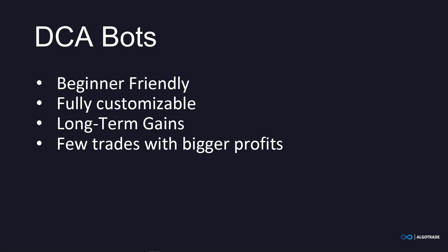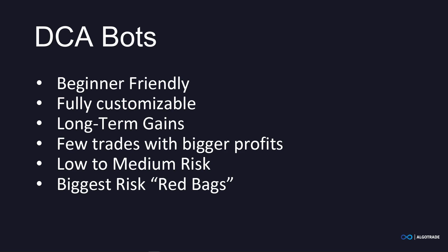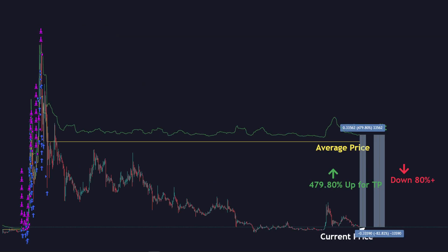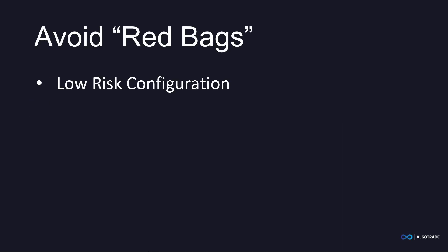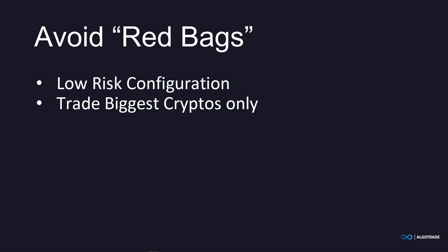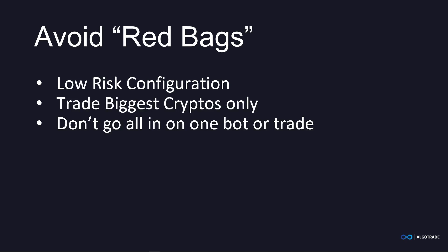DCA bots are low to medium risk, depending on your configuration and choice of cryptocurrencies to trade. The biggest risk you face is getting stuck in so-called red bags — trades on cryptos that have gone down 80% to 90% or more, making it unlikely the trades will ever close and leaving you stuck with a losing trade. However, if you focus on low-risk configurations, only trade the biggest cryptocurrencies, and don't go all in, red bags can easily be avoided.